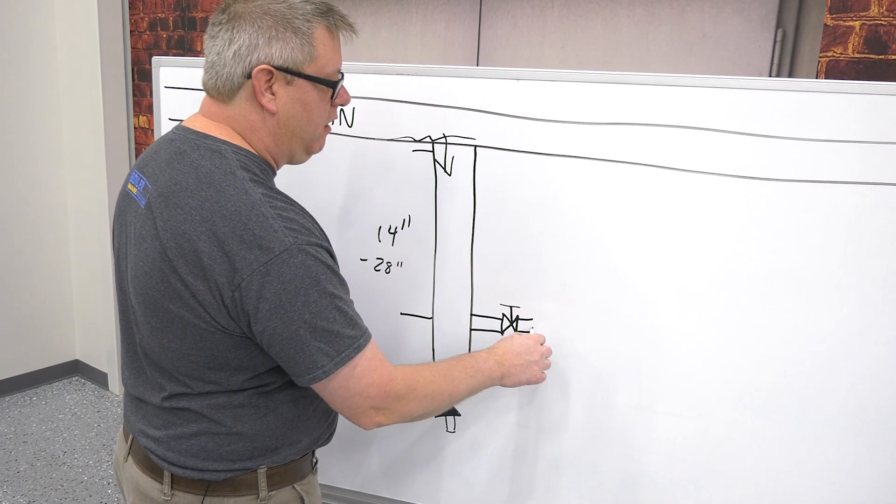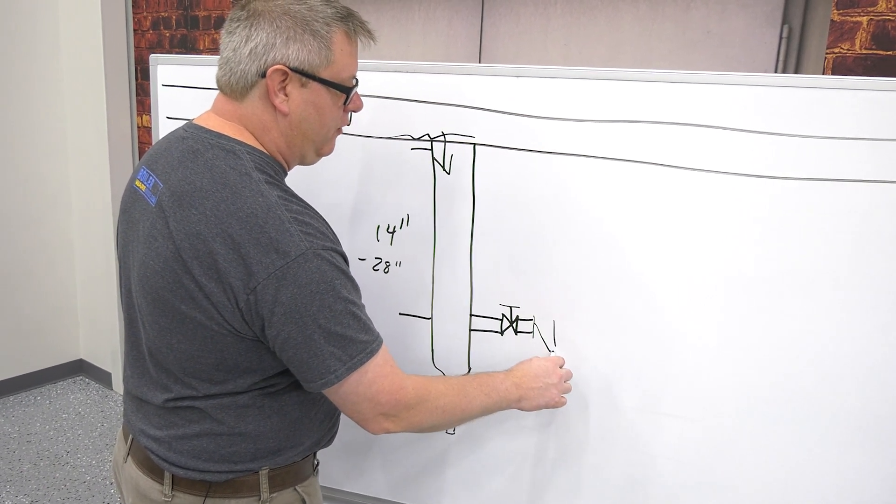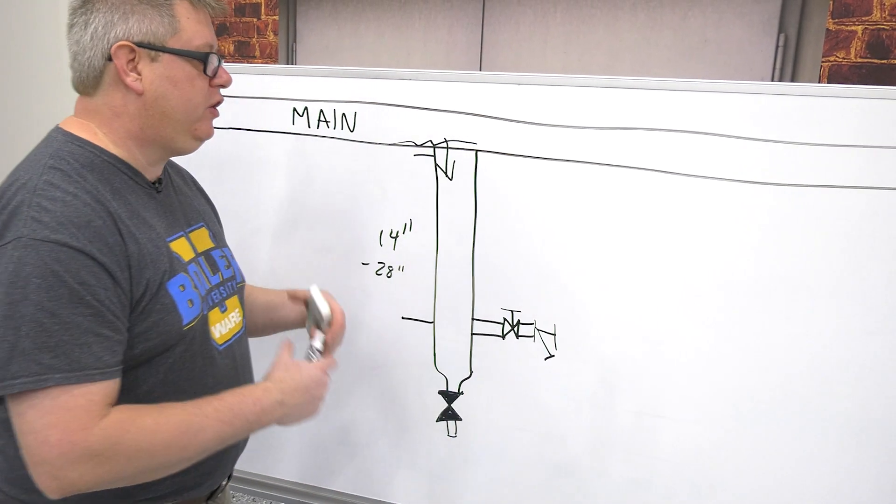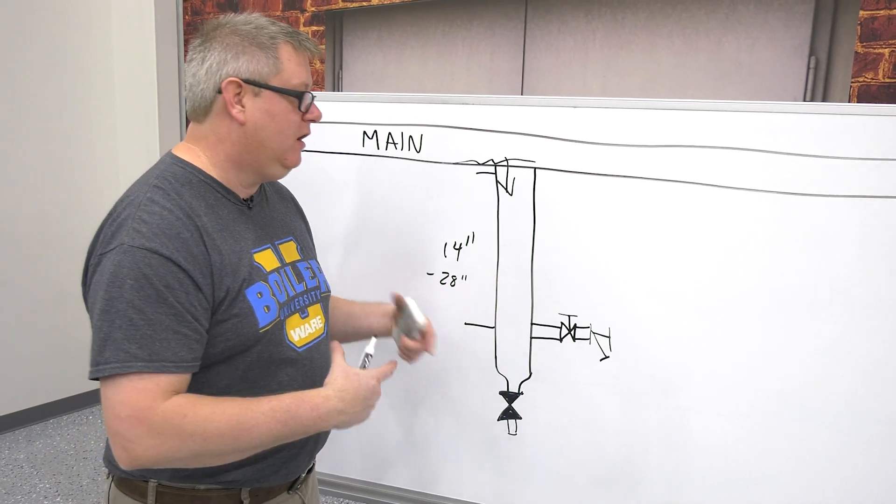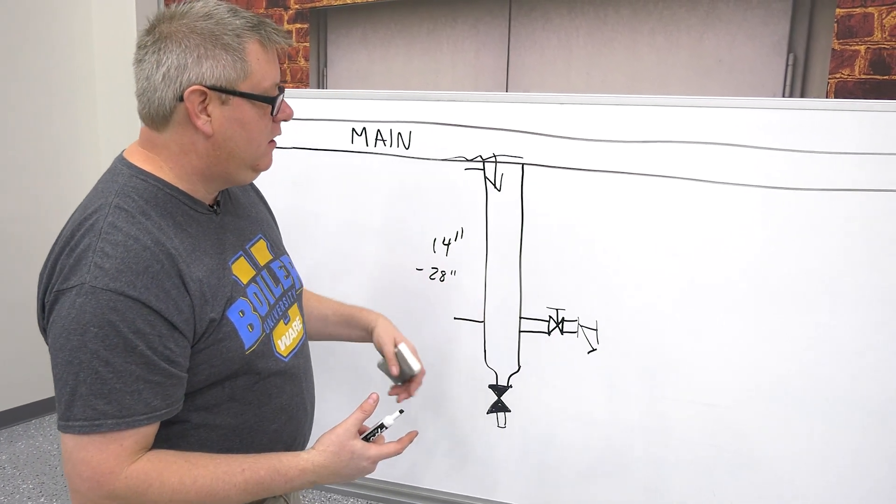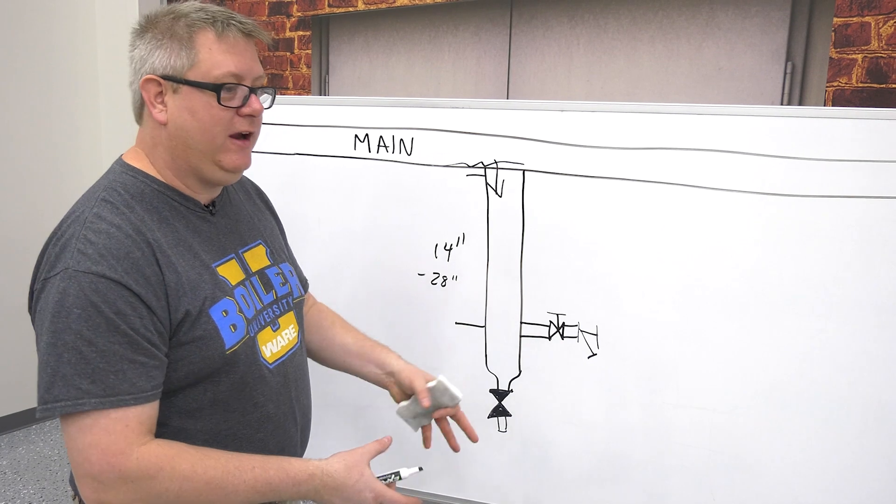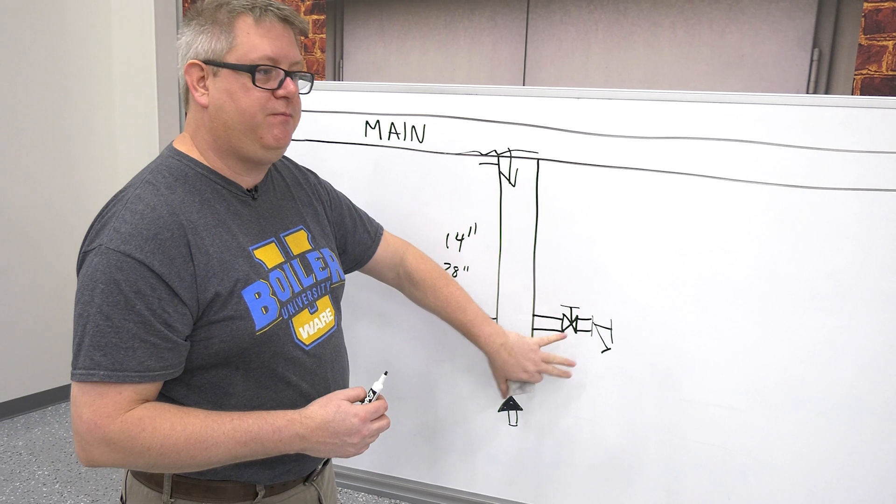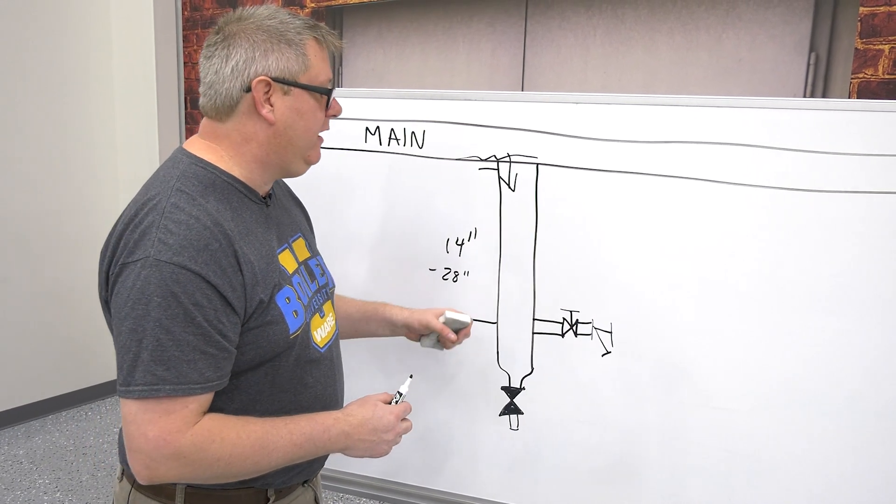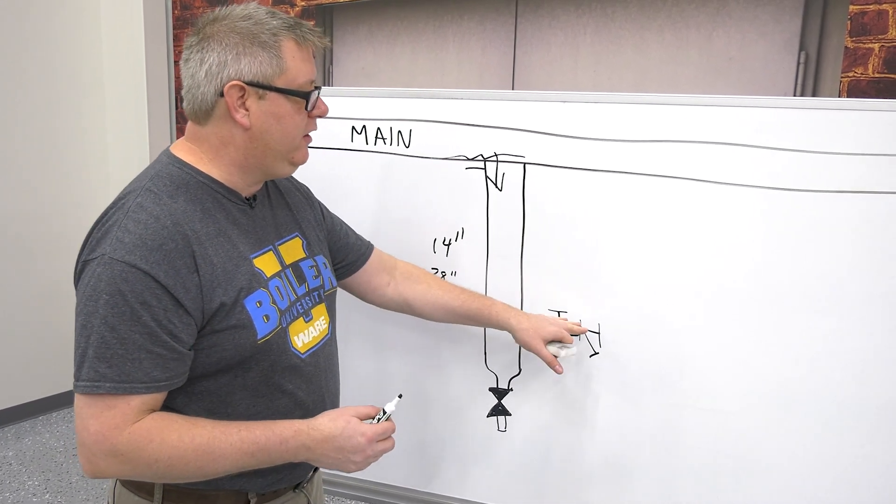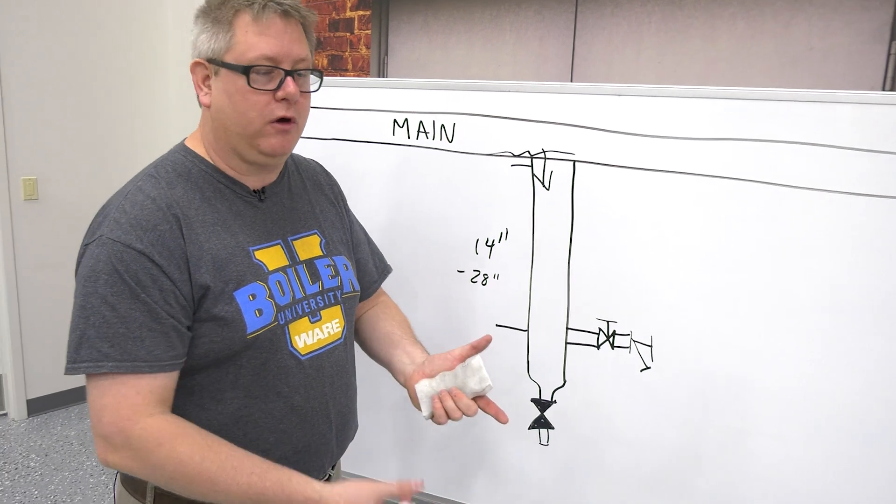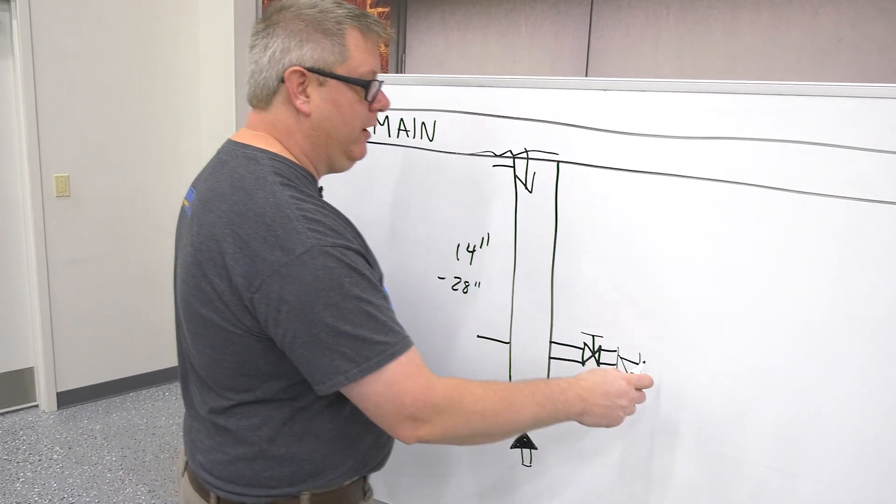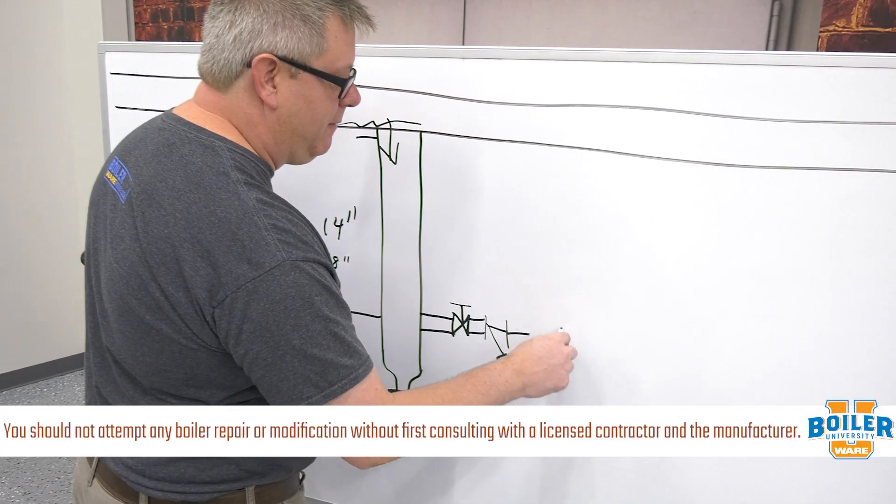After that isolation valve, we want to have a strainer. A strainer protects the trap from debris that comes in, and some traps have strainers integrated. If you're putting in a new drip leg, feel free to use that integrated strainer. If there's an existing strainer, I'm never going to take that out regardless of what type trap I'm putting in. Then we're going to have our trap itself.